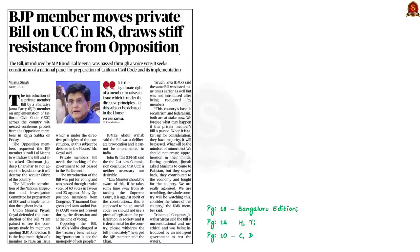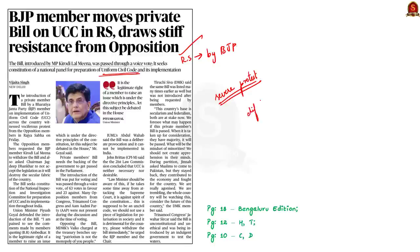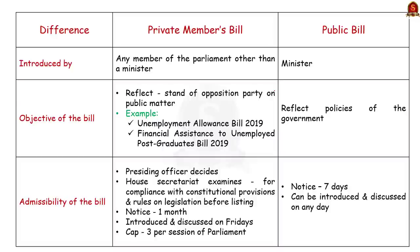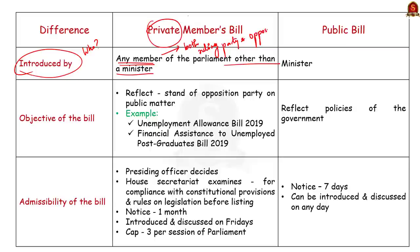For our next discussion: a private member bill was introduced in Rajya Sabha by a BJP member seeking to implement uniform civil code across the country, which witnessed severe protest from opposition members. In this backdrop, let us see the difference between a public bill and a private bill. The first difference lies in who introduces the bill. If a bill is introduced by any member of parliament other than a minister, it is called a private bill — this includes members of both the ruling party and the opposition. If a bill is introduced by a minister, it is called a public bill. Both public and private bills can be introduced in either house of parliament.